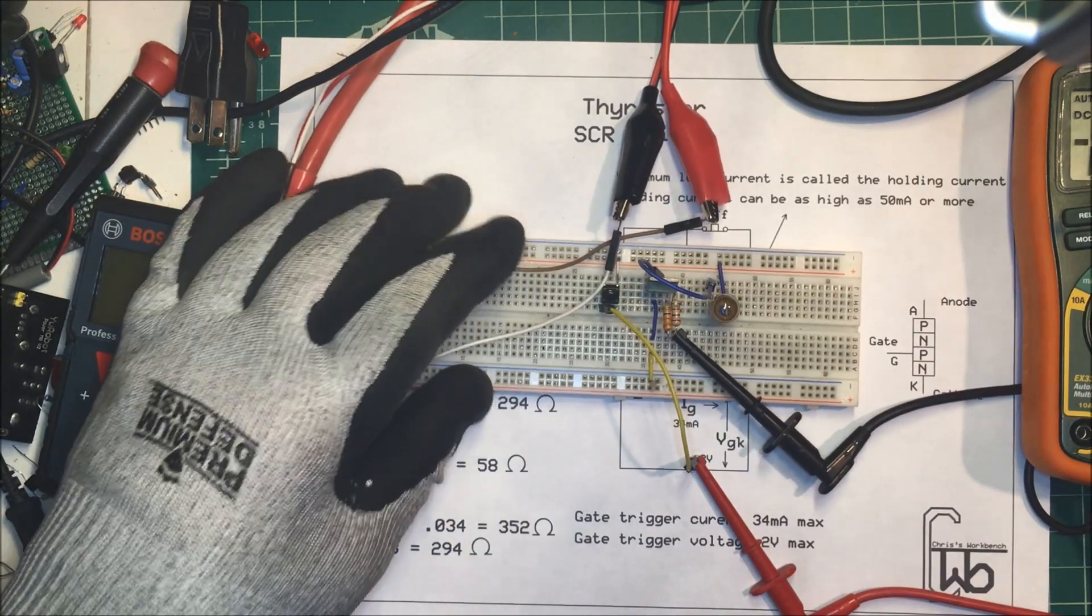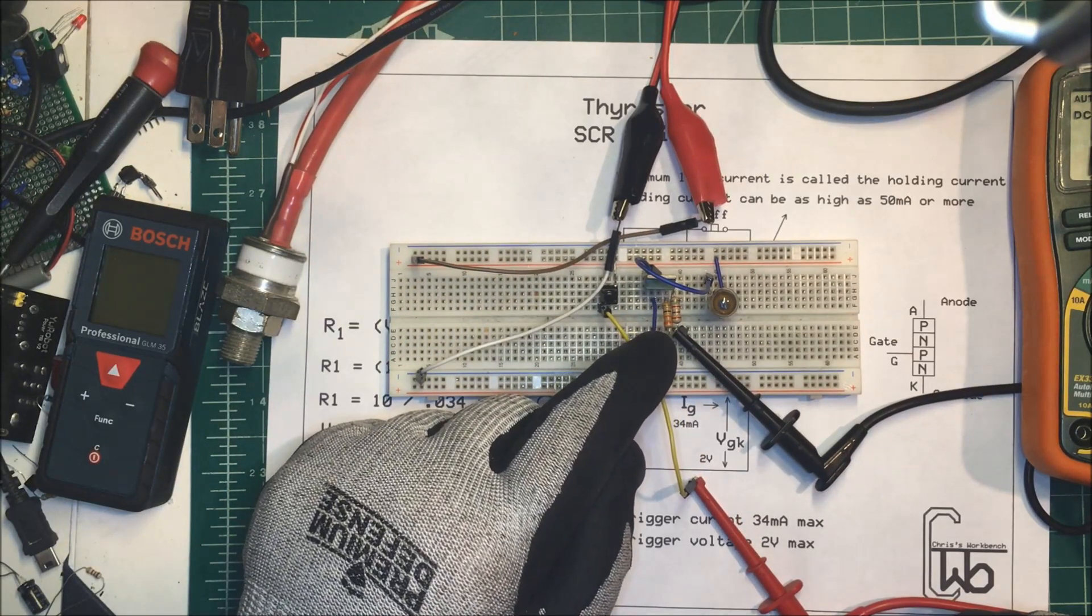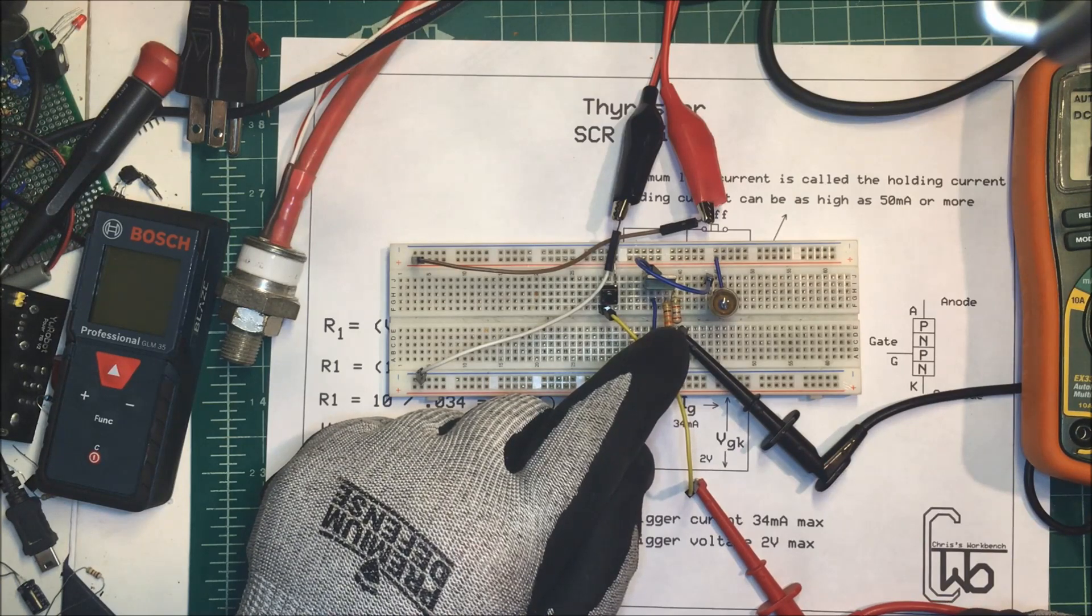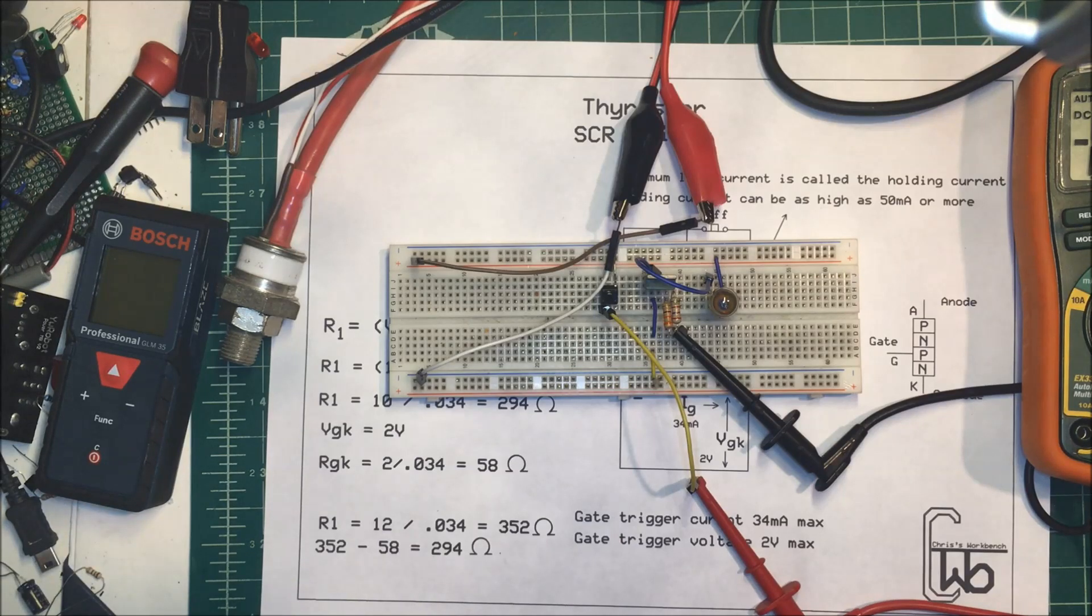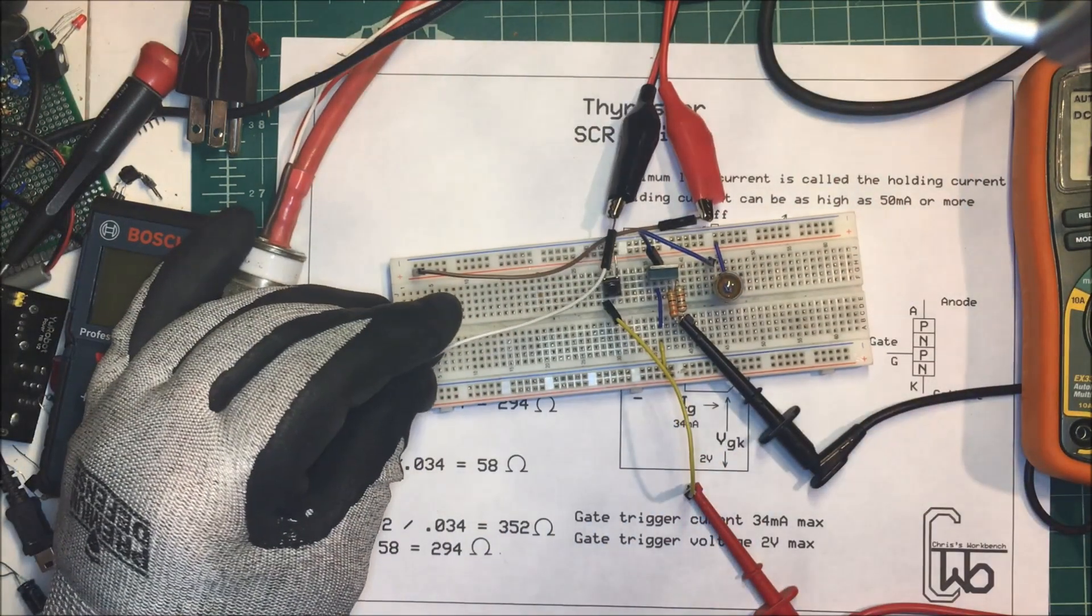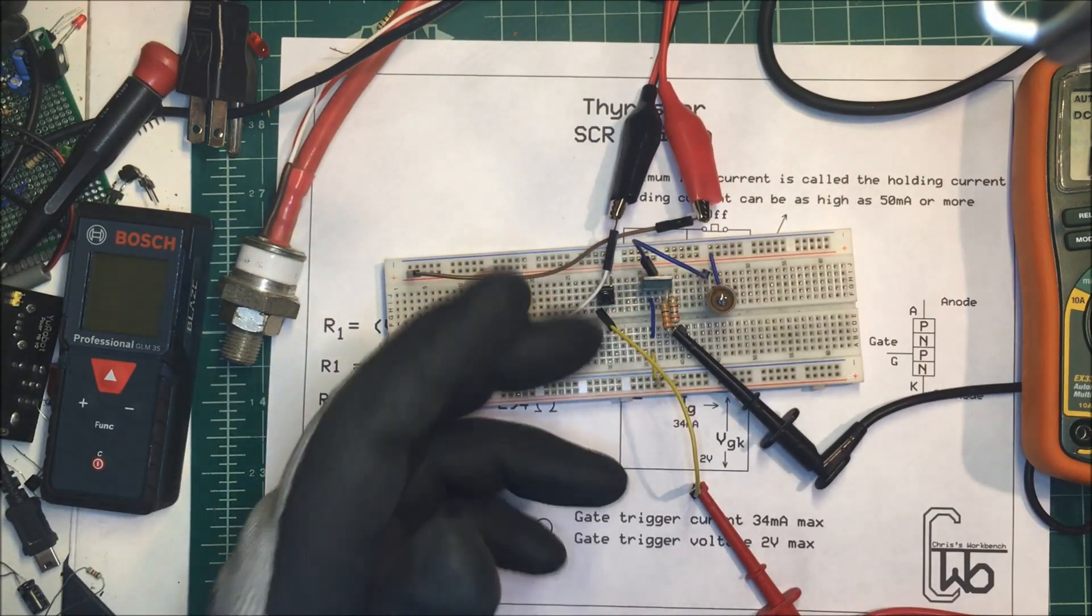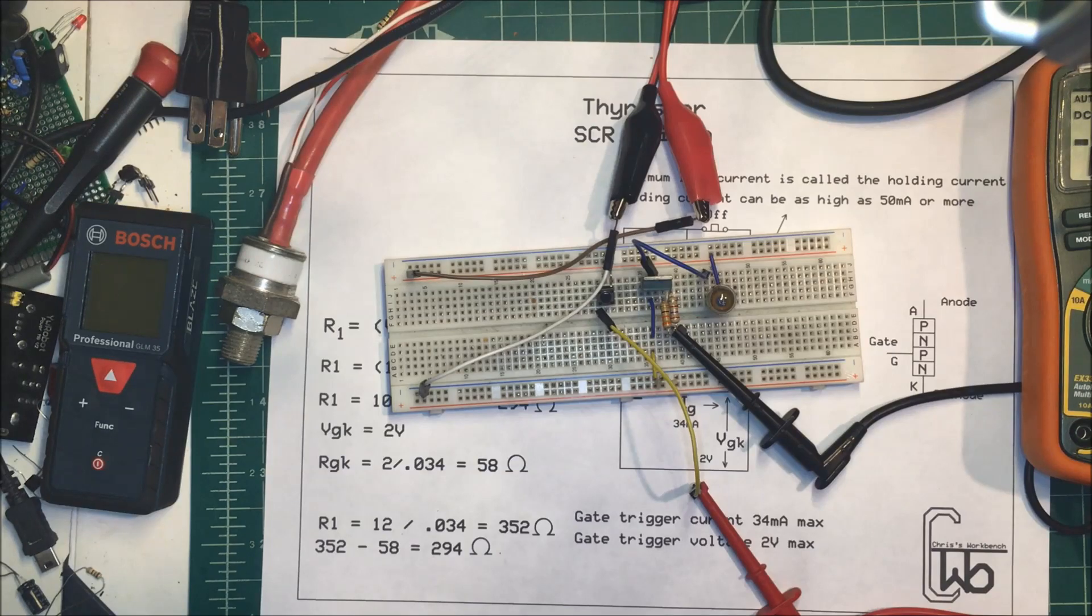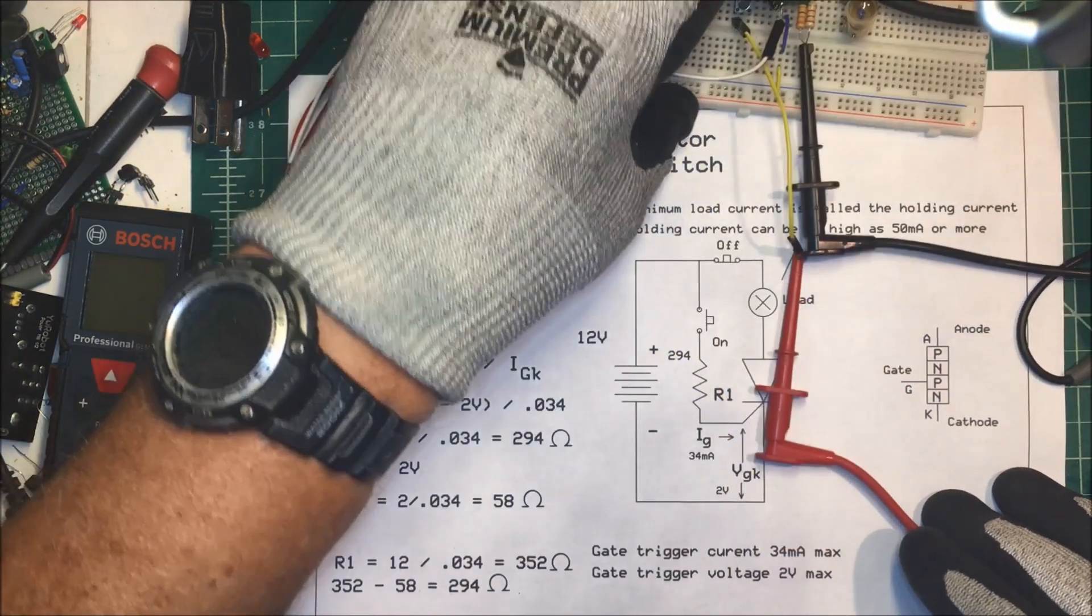So this happens to be a 333 ohm resistor and a 2k7 in parallel that gives me my 294 ohms. But that's all there is to it. Just put a pulse into the gate and it'll stay on until you disconnect the power from the load. And that's it, that's an SCR switch. Thank you.